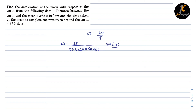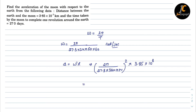To calculate the acceleration we use the relation a = ω²r. So we get omega squared, that is (2π / (27.3 × 3600 × 24))², multiplied by r. Here r is 3.85 × 10⁵ kilometers, which we convert to meters to get 3.85 × 10⁸ meters. Solving this gives 2.73 × 10⁻³ meters per second squared.